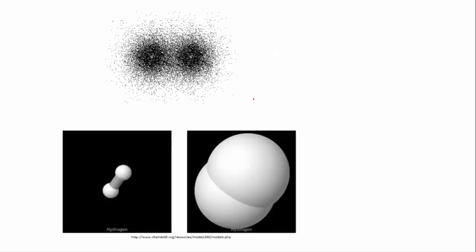There are a number of ways to represent a covalent bond. These two pictures from the Model 360 website show the hydrogen molecule in a ball-and-stick representation on the left and a space-filling representation on the right, which is an approximation of what the electron cloud of the complete molecule looks like.